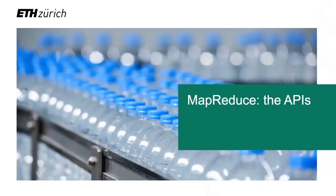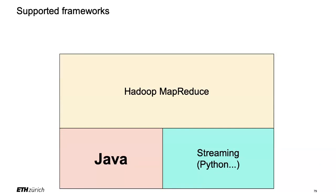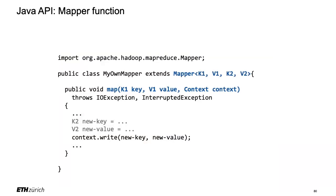How do we use MapReduce as a user? There are plenty of ways. The natural language is Java, since HDFS and MapReduce are natively implemented in Java. But you can also use Python or other languages. I'll show Java quickly and say a few words about Python — that's called the streaming API. Don't be scared; you don't need to know Java. This is just to give you a taste of what it looks like.